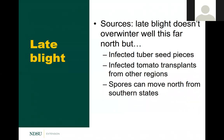This pathogen doesn't overwinter well this far north because it's an obligate parasite — it needs a living host to survive. The combination of cold temperatures and a long winter means there's usually no starting inoculum in your garden. However, it does get spread with tuber seed pieces. You could also purchase a tomato or potato transplant grown in a greenhouse in another area and introduce it into your garden. To a lesser degree, spores are able to travel north from southern states.